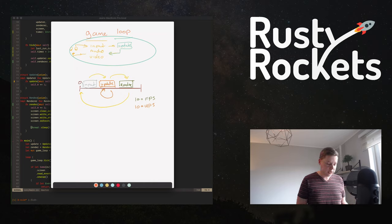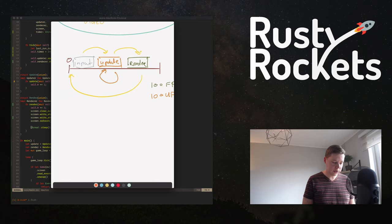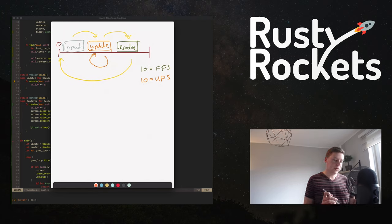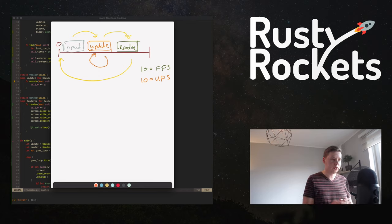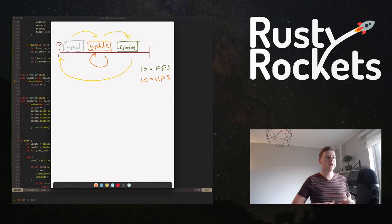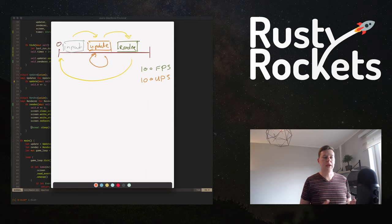Let's start by looking at the input, update, and render part. As we mentioned last time, in a simple game loop you go from input — you receive input from the player — then you update the game state to the current state, and then you render that state to the player using the screen and also audio.